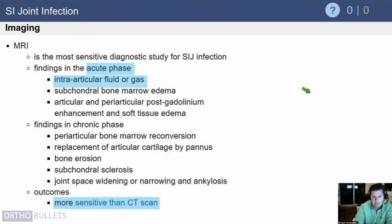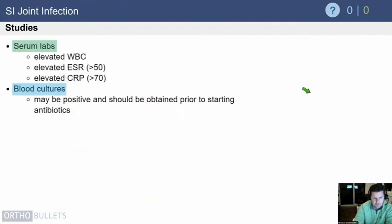MRI is probably the best study. In the acute phase, you won't find anything on radiographs, but on MRI you may find fluid or gas in the SI joint, edema, or associated osteomyelitis adjacent to it. Gadolinium can help identify soft tissue edema. In the chronic phase, you'll start finding more significant changes on CT scan or X-rays, such as bone erosion, sclerosis, or other chronic changes.